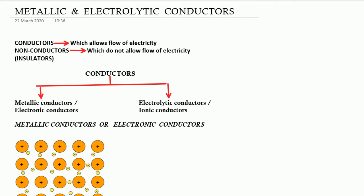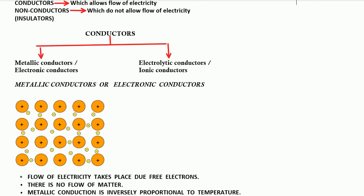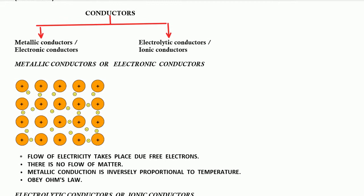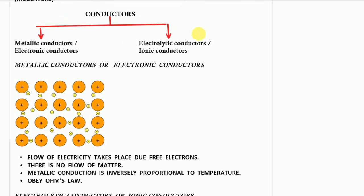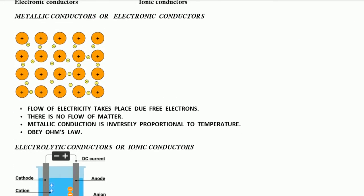These conductors are classified into two types: metallic conductors, also known as electronic conductors, and the second type, electrolytic conductors, also known as ionic conductors. We will start with the first type — metallic conductors or electronic conductors — and what happens in them.